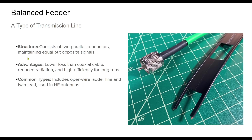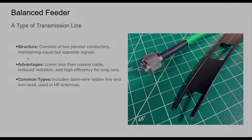A balanced feeder is a type of transmission line that consists of two parallel conductors carrying equal but opposite signals. This design minimizes radiation losses and provides high efficiency, making it ideal for long-distance HF transmissions. Unlike coaxial cable, balanced feeders are less affected by impedance mismatches, reducing loss and improving power transfer. Open wire ladder line and twin line are common types of balanced feeders, often used in dipole and multiband antenna systems.